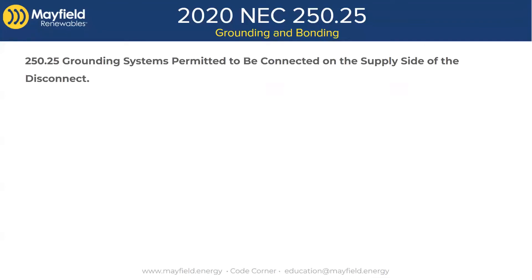In 2020, 705.11 — as many people working in solar know — is our supply side connections section, and that's a brand new code section as of 2020. What I would say is missing from that code section... well, it's awesome that we have a supply side connection section now. Prior to 2020, it was like: you can do it, but we're not going to tell you how. So go back into 230, go back into 250, fumble around, make it happen. Now at least we have some legitimate rules we can point to.